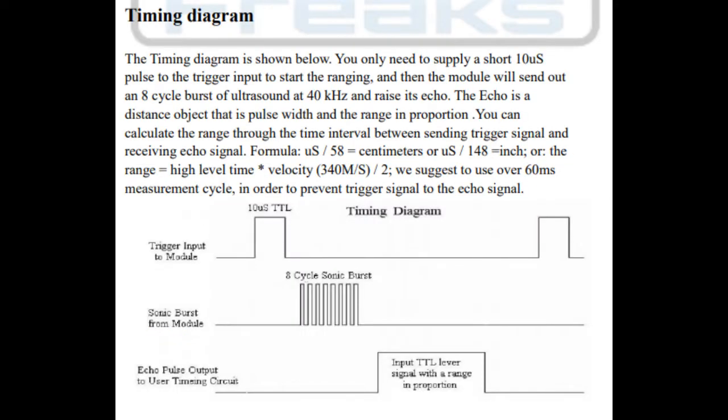The timing diagram is shown below. You only need to supply a short 10 microseconds pulse to the trigger input to start the ranging, and then the module will send out an 8-cycle burst of ultrasound at 40 kHz and raise its echo.